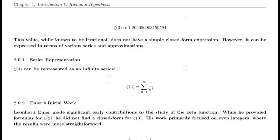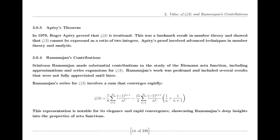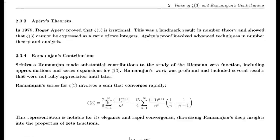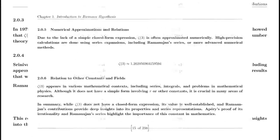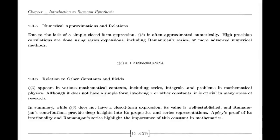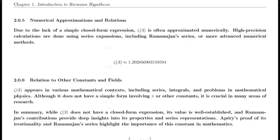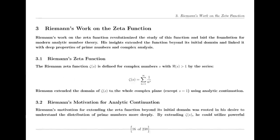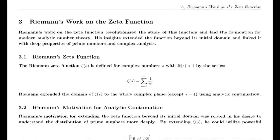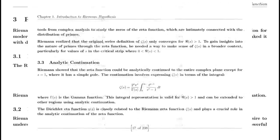Finally, the Riemann Hypothesis itself: Riemann proposed that all non-trivial zeros of the zeta function lie on the critical line where the real part of s is one half. This hypothesis has profound implications for number theory, particularly in understanding the distribution of prime numbers. Despite extensive numerical evidence supporting the hypothesis, a formal proof or disproof remains one of the greatest challenges in mathematics.